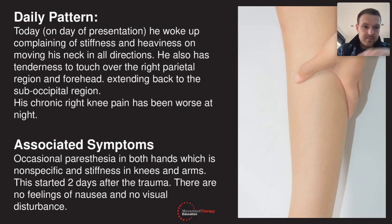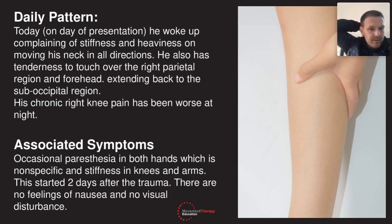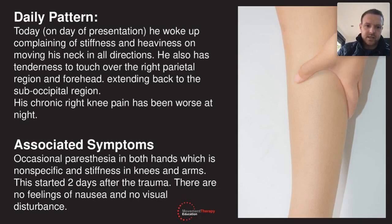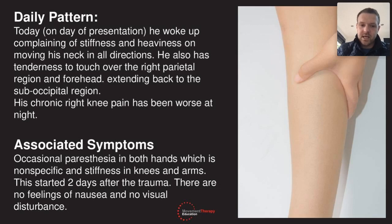On the day he's presenting into clinic, he woke up complaining of stiffness and heaviness on moving his neck in all directions. He also has tenderness to touch over the right parietal area and the forehead, extending back to the suboccipital region — the base of his skull on the back. His chronic right knee pain has been worse at night. Associated symptoms: occasional paraesthesia — tingling numbness in both hands, which is non-specific. This started two days after the trauma. There are no feelings of nausea and no visual disturbances.